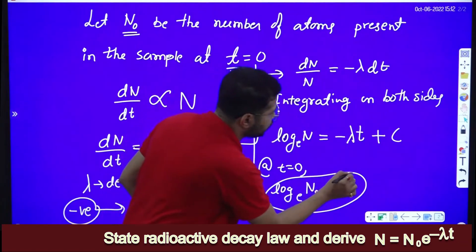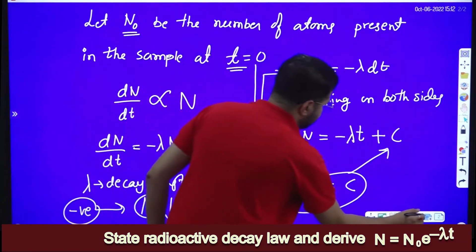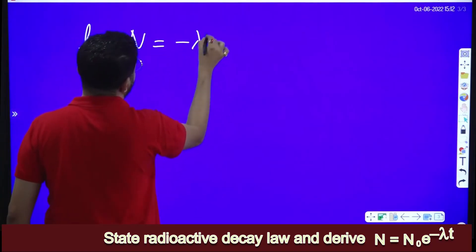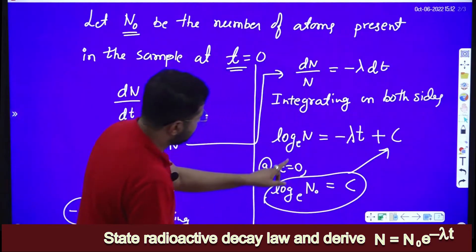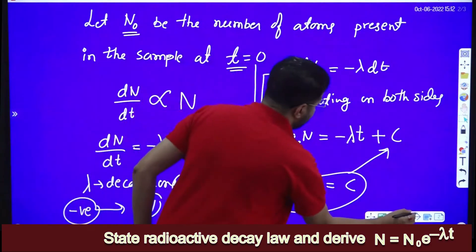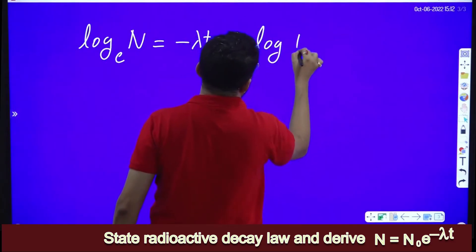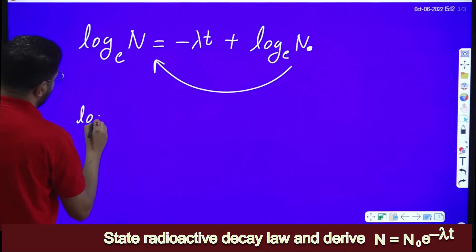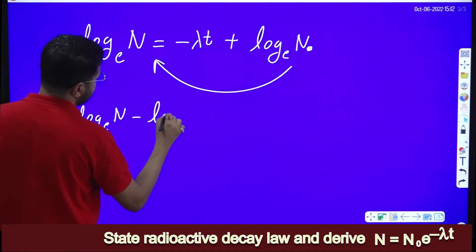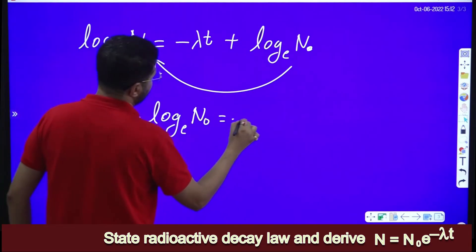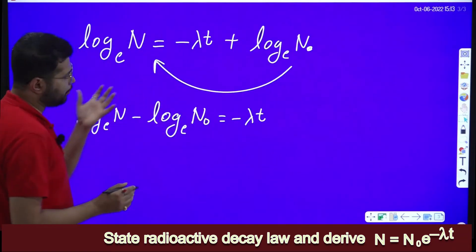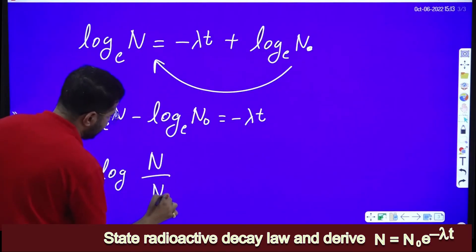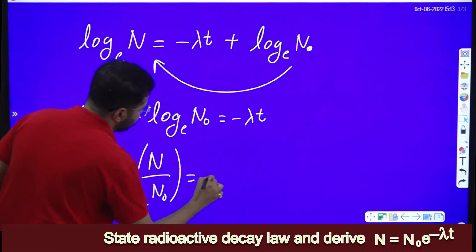Now this value of C we substitute back. So log N to the base e is equal to minus lambda t plus C, where C is log N naught. Bringing log N naught to the LHS: log N to the base e minus log N naught to the base e is equal to minus lambda t. Using log a minus log b equals log(a/b), this gives log(N/N naught) to the base e is equal to minus lambda t.